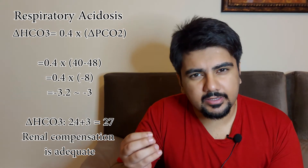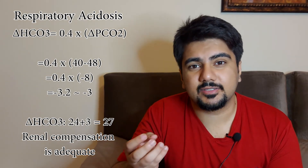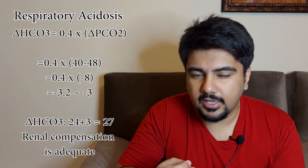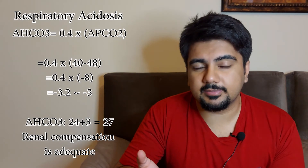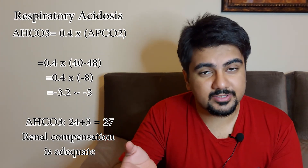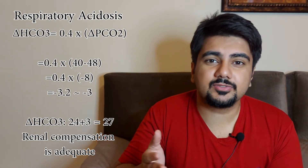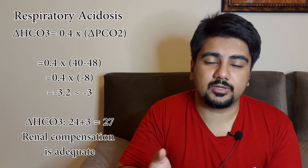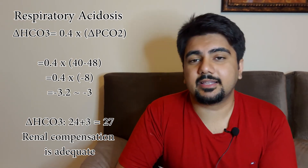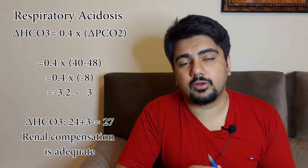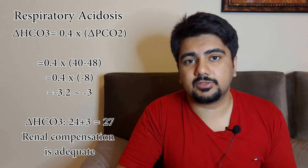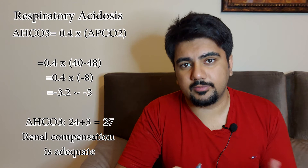You shift the −3 to the other side of the equation, and it gets added to the bicarbonate. This makes sense because there is acidosis going on, and the kidneys need to balance that acidosis by increasing the amount of bicarb, which is a base. So 24 + 3 = 27, which was the exact bicarb in our example. Therefore, in this condition, there is adequate renal compensation going on.